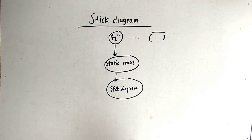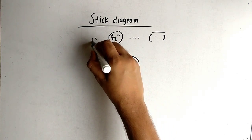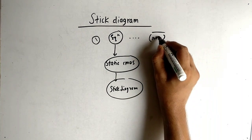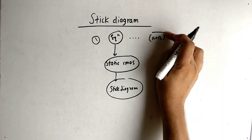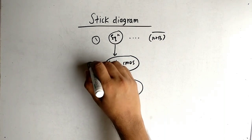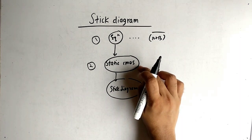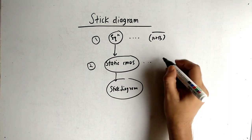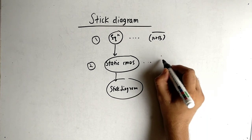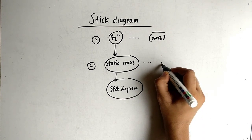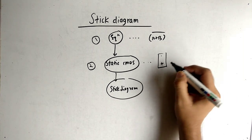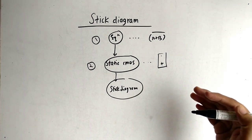The first step is the equation. The equation should be in the form of something with a whole bar — for example, (A + B) bar. The bar is important. When drawing the static CMOS circuit, we need to know the logic for how to represent the multiplied and the plus terms.